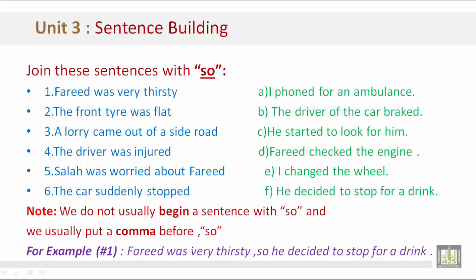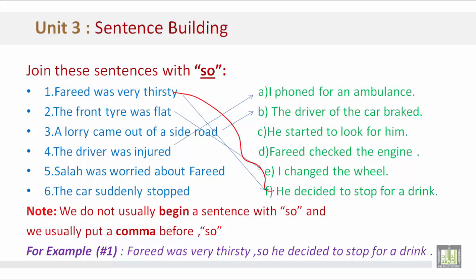For example: Number 1 — 'Fareed was very thirsty, so he decided to stop for a drink.' Number 2 — 'The front tire was flat, so I changed the wheel.' Number 3 — 'A lorry came out of a side road, so the driver of the car braked.' Number 4 — 'The driver was injured, so I phoned for an ambulance.' Number 5 — 'Salah was worried about Fareed, so he started to look for him.'